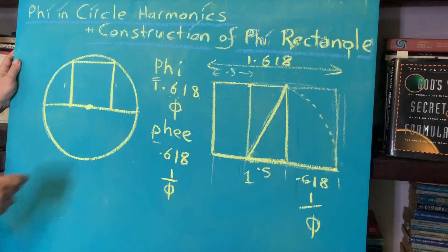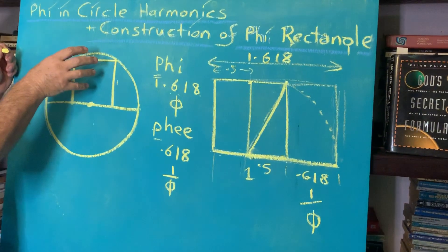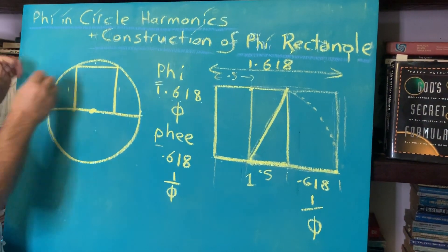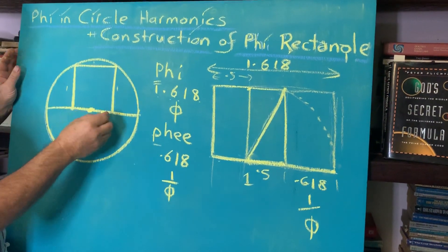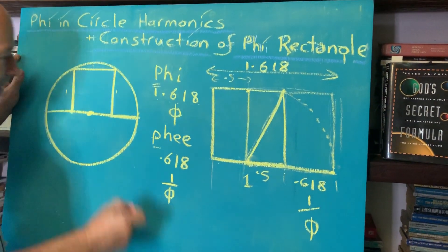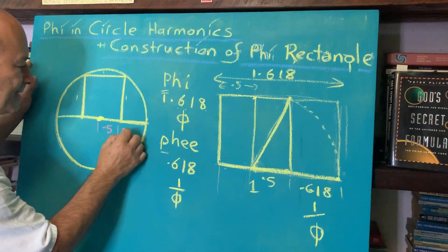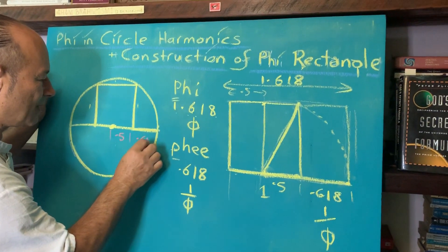When we examine the harmonics of the circle and insert the unit square based on the center, we're interested in this gap. From here to there is 0.5, and this distance here is 0.618.